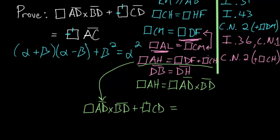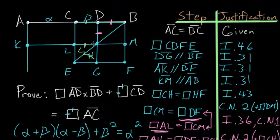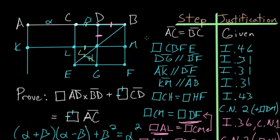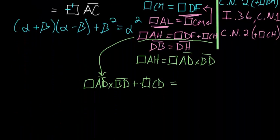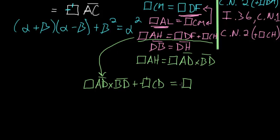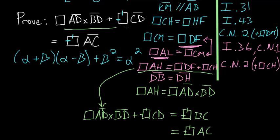Adding square LG to both sides: on the left we have rectangle AD·BD plus the square on CD; on the right we have the gnomon DF plus CH plus square LG, which together compose the large square CBFE — the square contained by line BC, which equals the square on AC. This matches exactly the statement we set out to prove, so we end the proof here with QED.